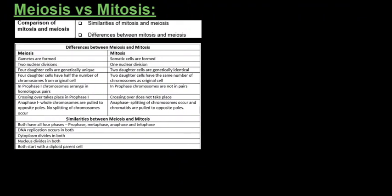Your exam guidelines require you to know the similarities and differences between meiosis and mitosis. Looking at the differences first: in meiosis, gametes are formed, whereas with mitosis, somatic or body cells are formed. Mitosis has one nuclear division, whereas meiosis goes through two — meiosis one and meiosis two.